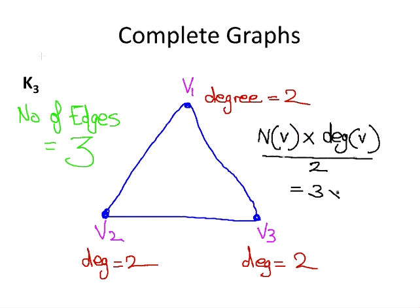Now, here we have 3 times 2 all over 2 and that gives us 3. Now, you may ask, why are we dividing by 2? It's essentially because we count each vertex twice otherwise. Each edge, we will count each edge twice otherwise. So, it's to stop that.